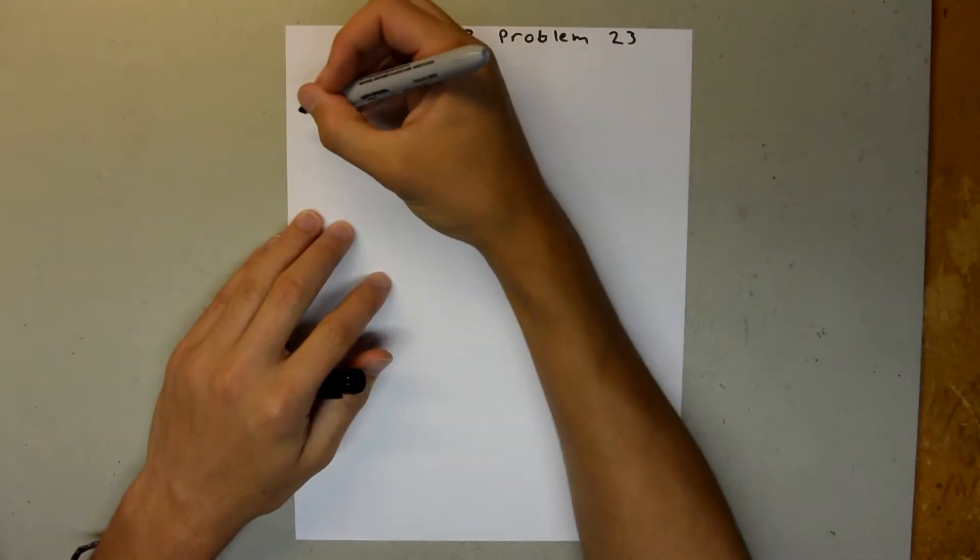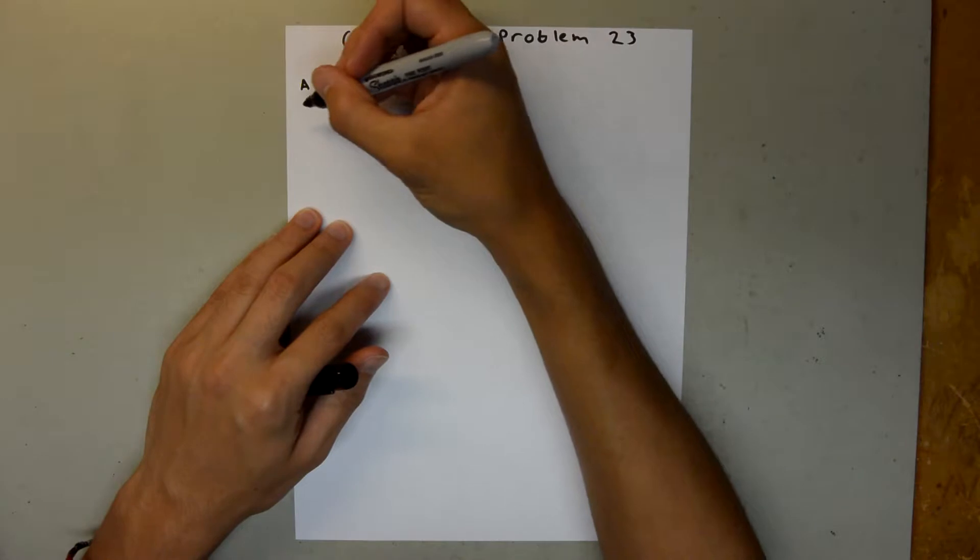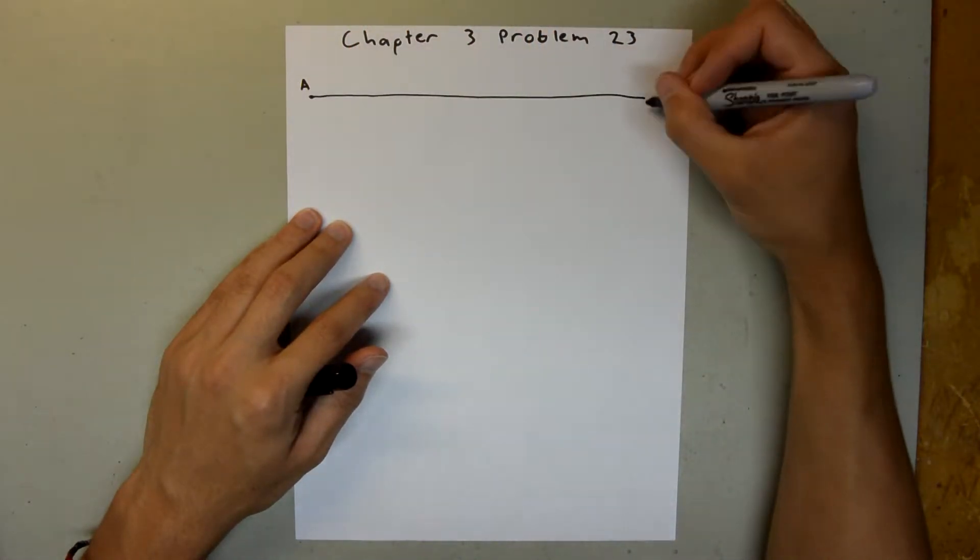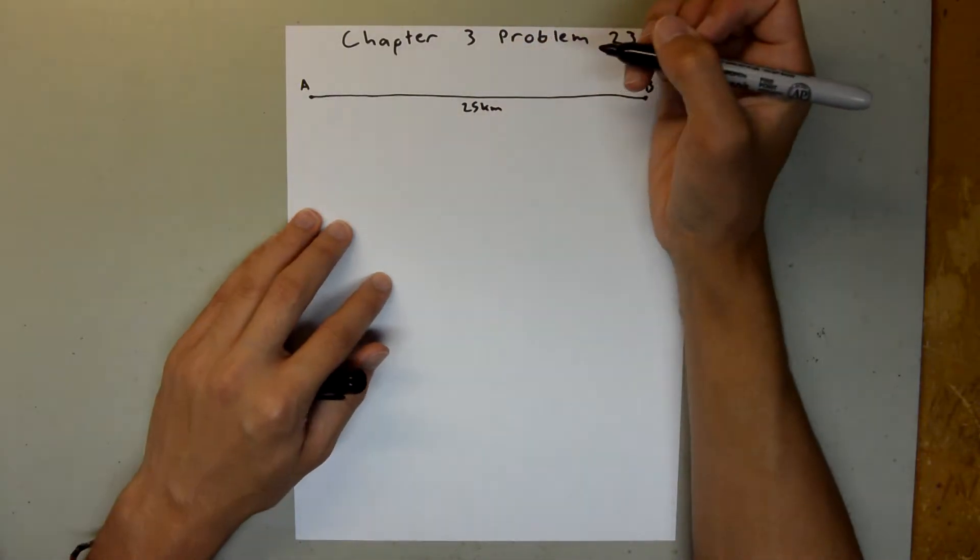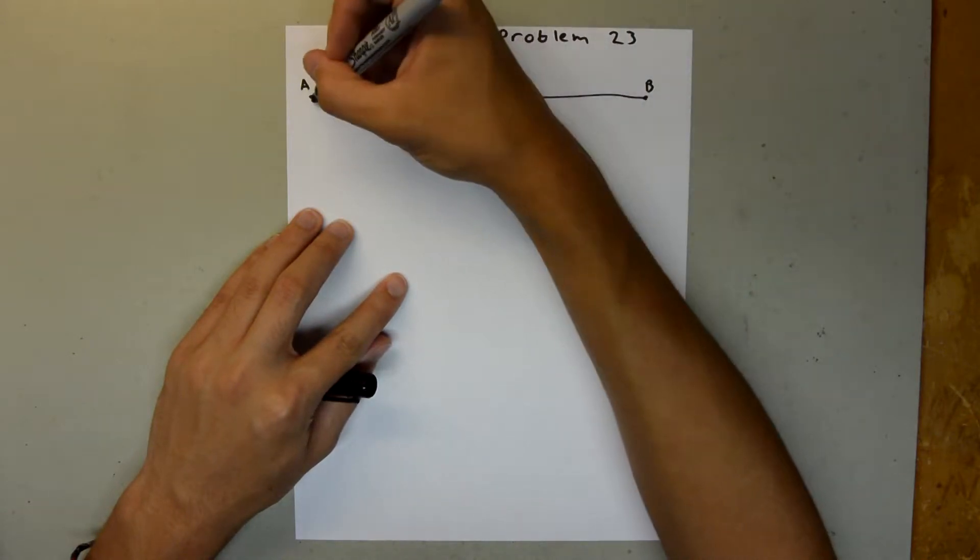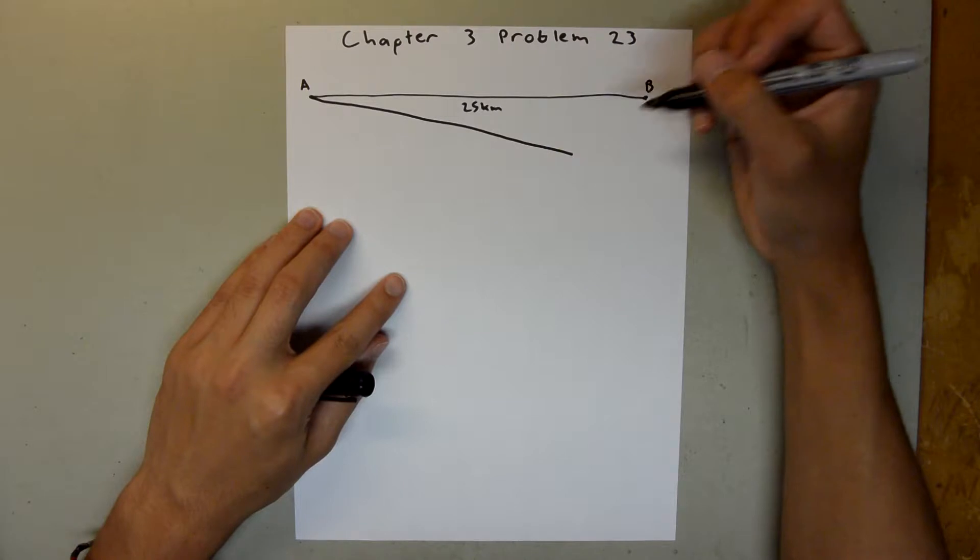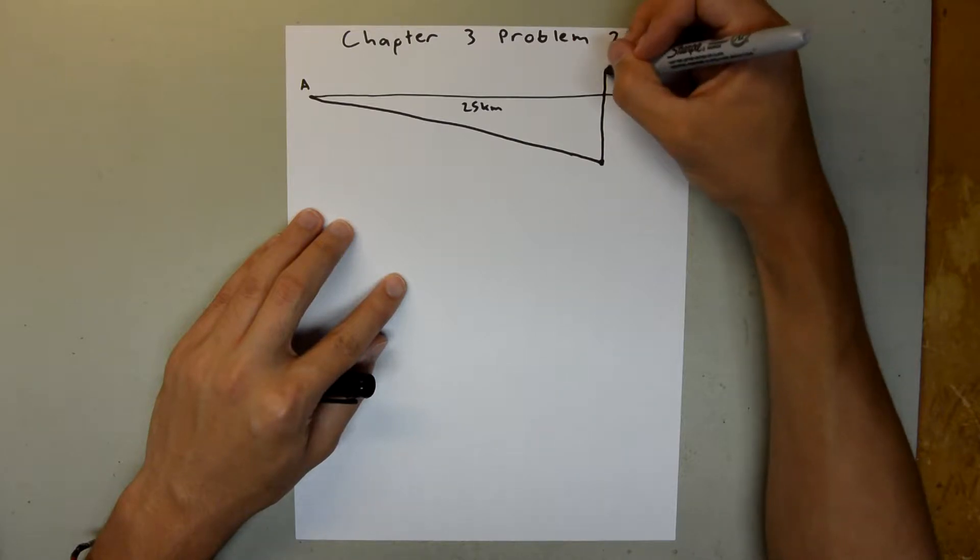So, we have, let's say right here, we have A, and then over here, we have B, this is 25 kilometers, and then we have a trip down here, and then up, and we'll say this is point C.